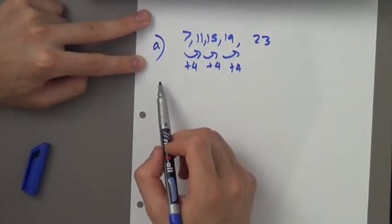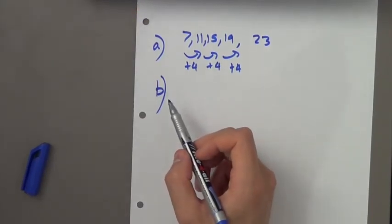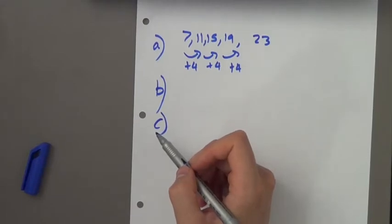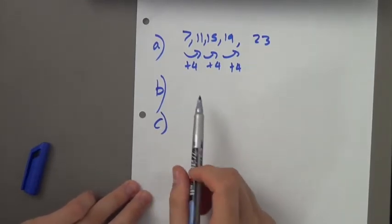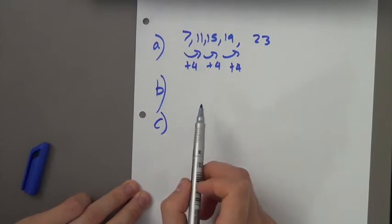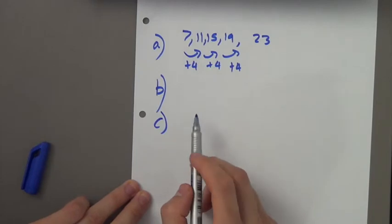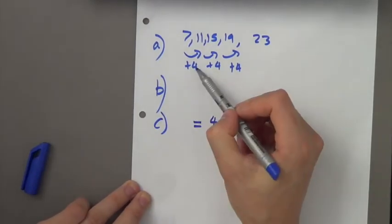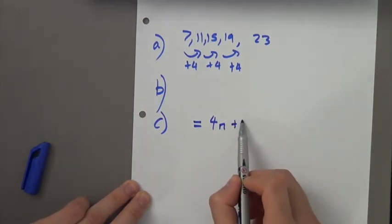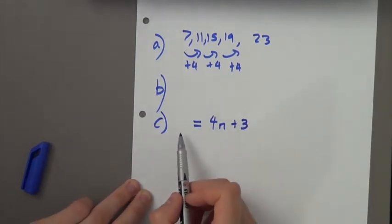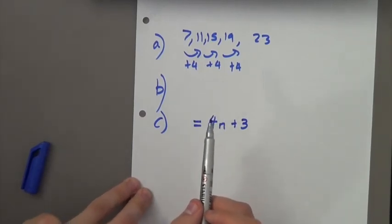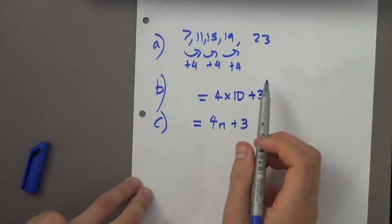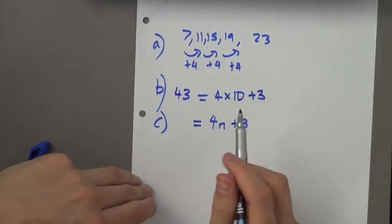Part C asks: write an expression in terms of N for the nth number in the sequence. Since we're adding 4 each time, the formula starts with 4N. Then, how do we get from 4 to 7? We plus 3. So the formula is 4N + 3. For part B, find the tenth number in the sequence: substitute 10 for N — 4 times 10 plus 3 gives 43.